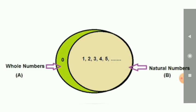In diagrammatic representation: 1, 2, 3, 4, 5. The number starts from 1 means it is said to be natural number. If the number starts from 0, 1, 2, 3 it is said to be whole number.